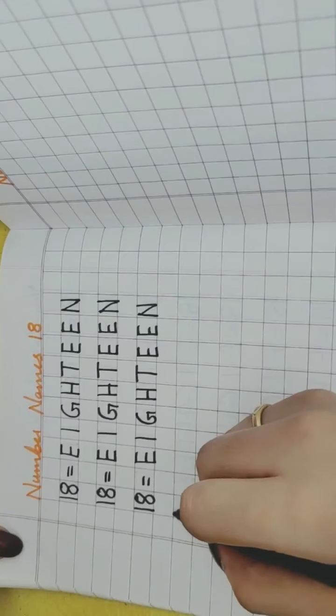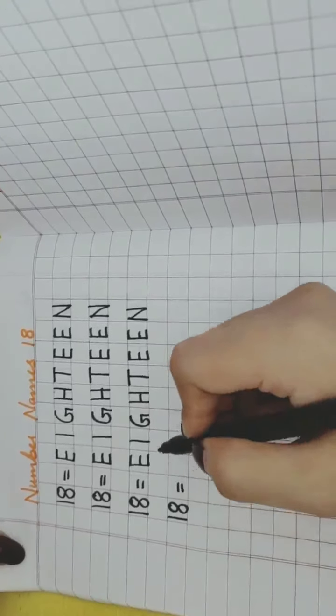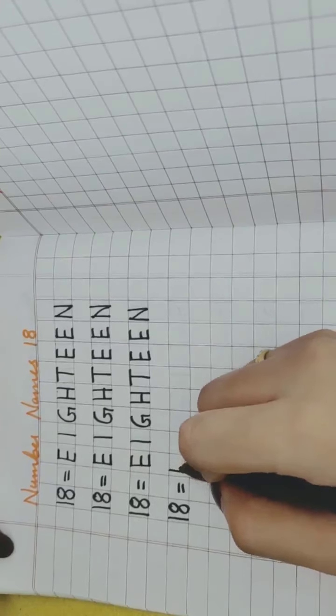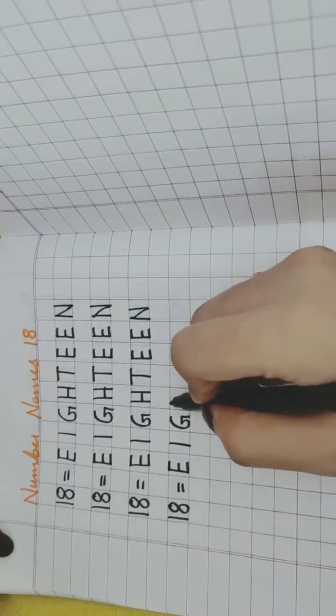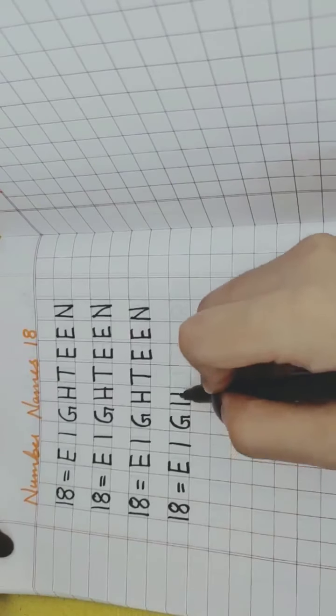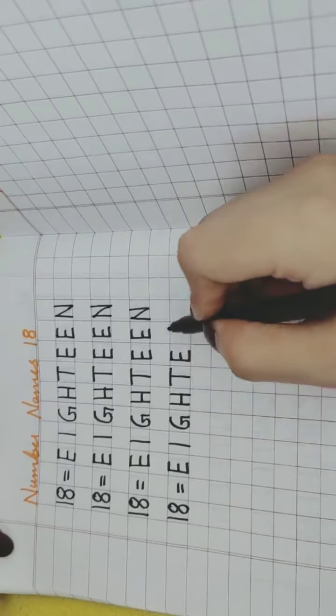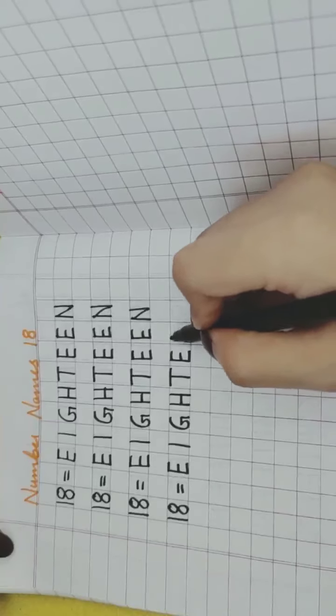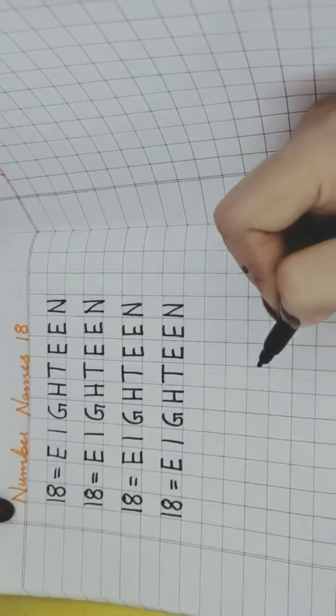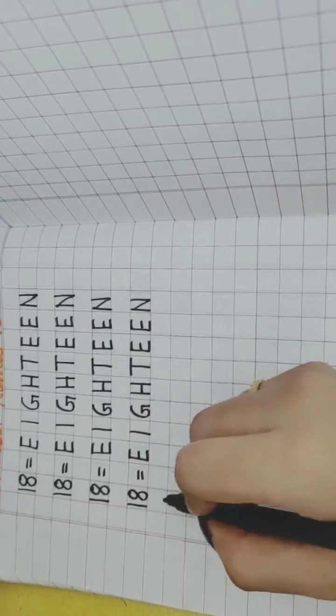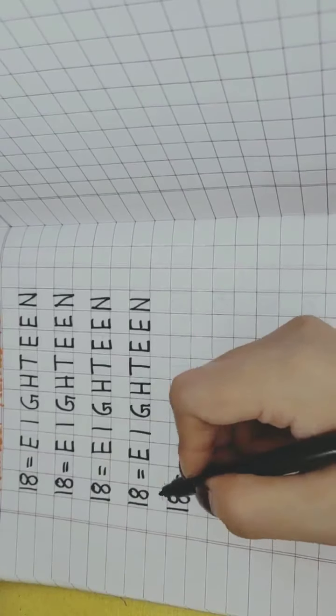Again, repeat. One, eight, 18. E, I, G, H, T, E, E, N. 18. Very good. One, repeat. One, eight, 18.